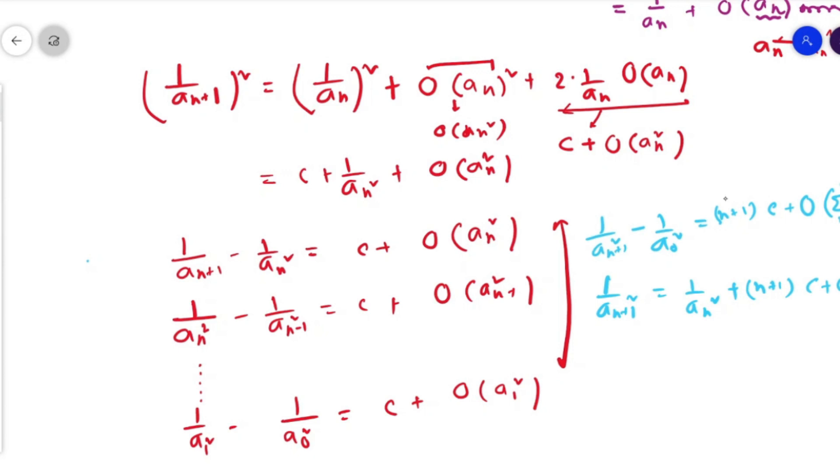Now from here, in the limiting case, we can write a_n² is approaching 1/(nc). So a_n² is approaching 1/(nc), so this sequence is diverging.